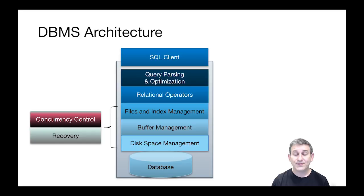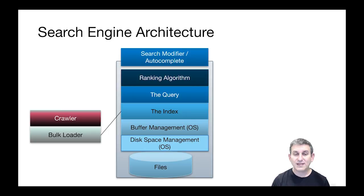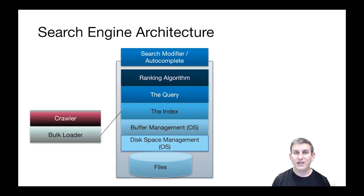If you look at information retrieval systems, they're similar but different. At the bottom level of the stack we have similar things — files over which we have disk space management and buffer management — but in most information retrieval systems the buffer management and disk space management is deferred to the operating system. Above that, instead of a general-purpose access methods layer, we have what's called the index. And above the index we have the query — in some sense, there's only one kind of query that ever gets asked in an information retrieval system: a keyword search query.